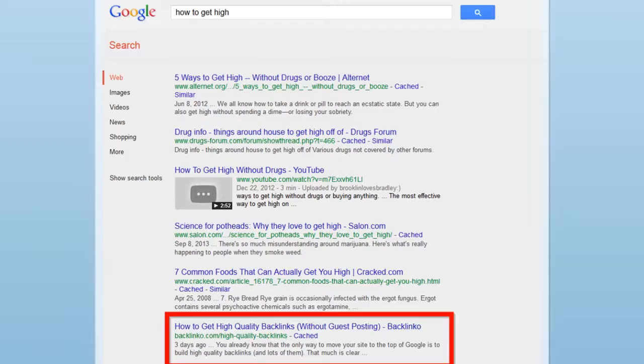But here's where things got weird. One day, I was checking my Google rankings and I saw something that made me almost fall out of my seat. Not only was I ranking for high-quality backlinks, but I also ranked on the first page for the keyword How to Get High. Say what?